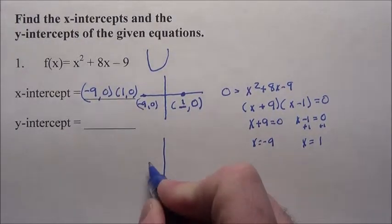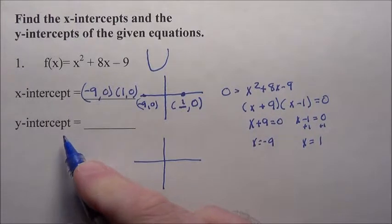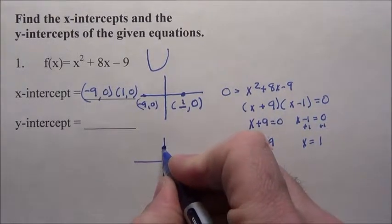Now, if I think of the y-intercept, again, what I always do, I draw my little graph here, my x-axis, y-axis, and I say okay, it's the y-intercept. So where's it crossing this guy?